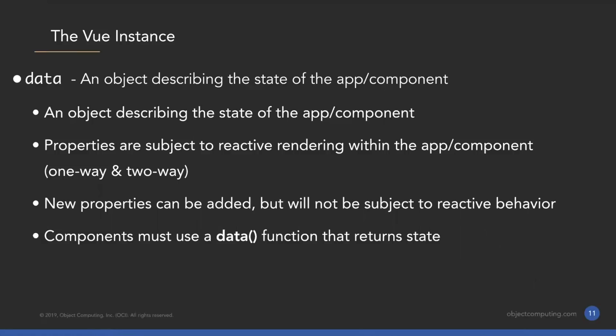On the left-hand side, we're creating a new Vue instance — the state for this Vue instance is just an object with 'myValue', 'myObject', and so on. On the right-hand side, we're defining a Vue component, and the important thing there is that the same data object is being returned from a function called 'data'. When you're writing components, you use a function. Realistically, most of the time you are writing components, so you'll almost always be doing what you see on the right-hand side.